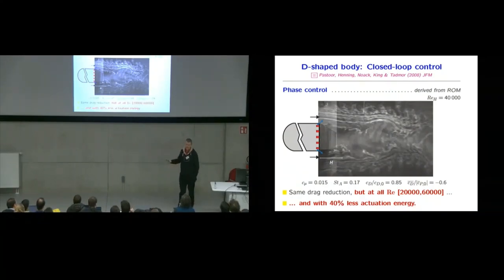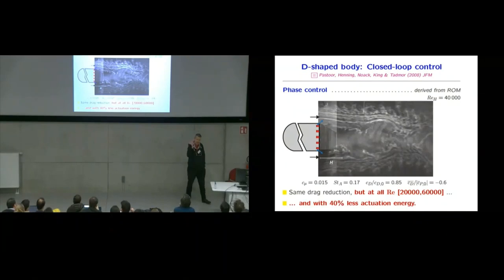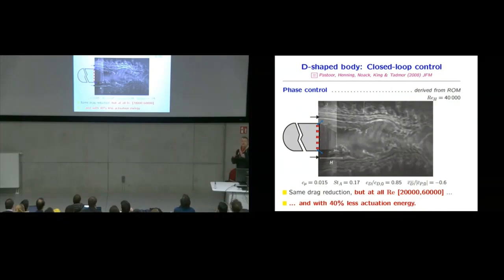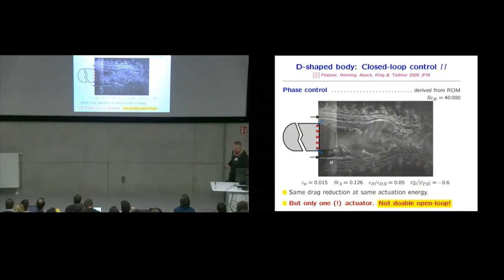So we can change the Reynolds numbers and we still get this 20% drag reduction. And we also save on the actuation energy, 40% actuation energy. So now with every watt which we invest in the actuation energy, we gain 5 watts in the towing power. So this is very energy efficient. By the way, you can also stabilize the wake with high frequency forcing. But then your energy investment would be significantly larger.